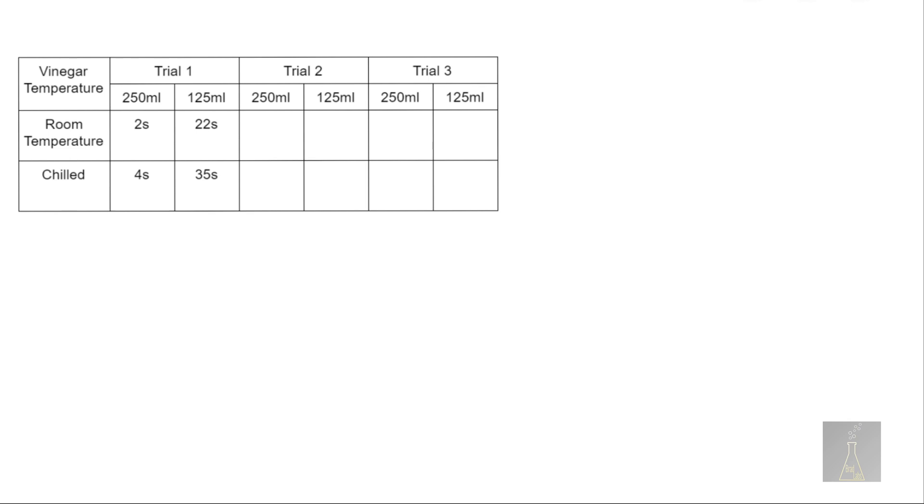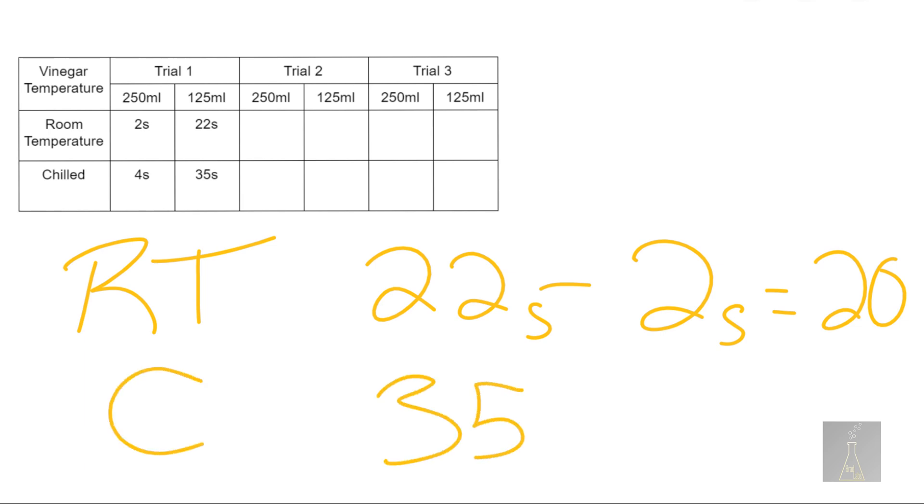There's one other helpful thing I think we can take from this data. We can see how much time it took for our baking soda and vinegar to go from its peak point of 250 milliliters all the way back down to 125 milliliters. Our room temperature baking soda and vinegar took 20 seconds and we can find that out, of course, by taking our end time and subtracting our start time to get 20 seconds. While our chilled baking soda and vinegar took quite a bit longer, it did it in 31 seconds.